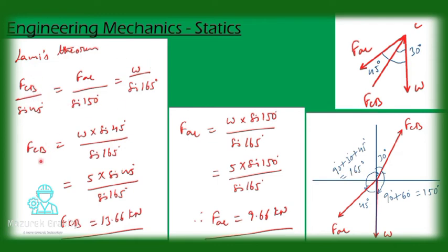So W equal to 5 kilonewton given in the problem. We get 5 into sin 45 by sin 165. We get FCB equal to 13.66 kilonewton.